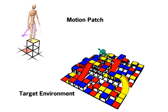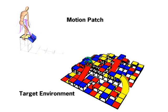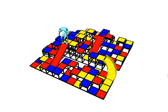The motion patches are connected to each other by finding intersections at overlapping regions. Then the target environment can be automatically annotated with a rich connected set of motion data that allows characters to navigate through the environment.